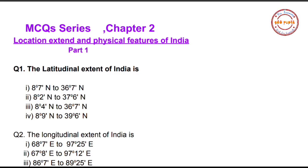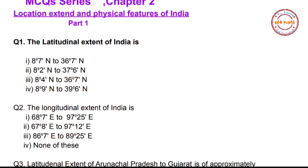Hello students, welcome to this video. This is Part 1 of the MCQ series of Chapter 2. As you know, we have started the MCQ series and the first chapter is already completed. Now we are moving to the second chapter, whose name is 'Location, Extent and Physical Features.' Without wasting our time, let's get started.